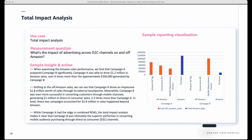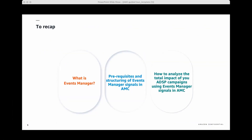These insights highlight the power of Events Manager data and the total impact analysis approach with AMC. It provides marketers with a truly comprehensive view of campaign performance, empowering them to make more informed optimizations that maximize the impact of their advertising spend across all customer touchpoints. In this video, we took a deep dive into Amazon's Events Manager signals in AMC. We learned what exactly is Events Manager, the key prerequisites and setup requirements, and how to query Events Manager signals within AMC to get a comprehensive view of campaign performance and total impact. By leveraging Events Manager signals within AMC, you will gain powerful insights to truly understand the full impact of your advertising efforts across all customer touchpoints on and off Amazon.